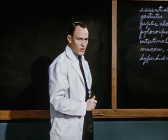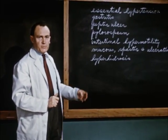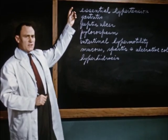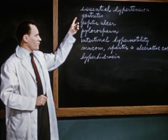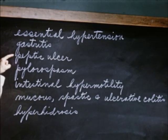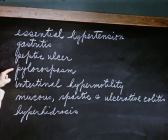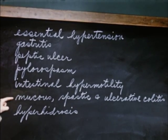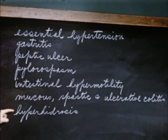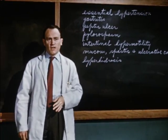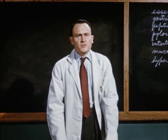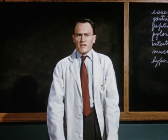Among the diseases in which autonomic imbalance is considered to be a prominent etiologic factor are such varied diseases as essential hypertension, gastritis, peptic ulcer, pylorospasm, intestinal hypermotility, mucus, spastic, and ulcerative colitis, hyperhidrosis, and other conditions not easily classified, but which are characterized by vague subjective symptoms and few, if any, objective findings.